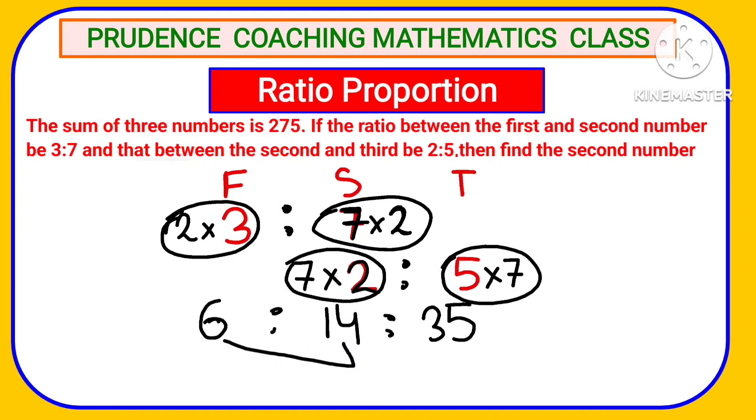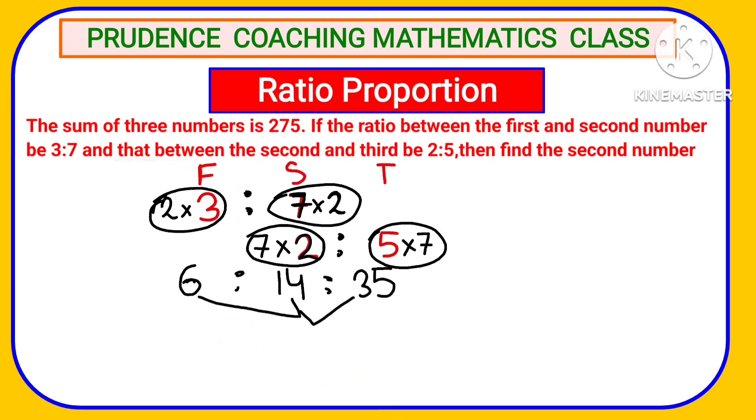But according to the question, it is given if we add these 3 numbers, then in actual you are going to get 275. So let us add 6+14=20, 20+35=55. So 55 in ratio is equal to 275 in actual, that is 55×5 times.